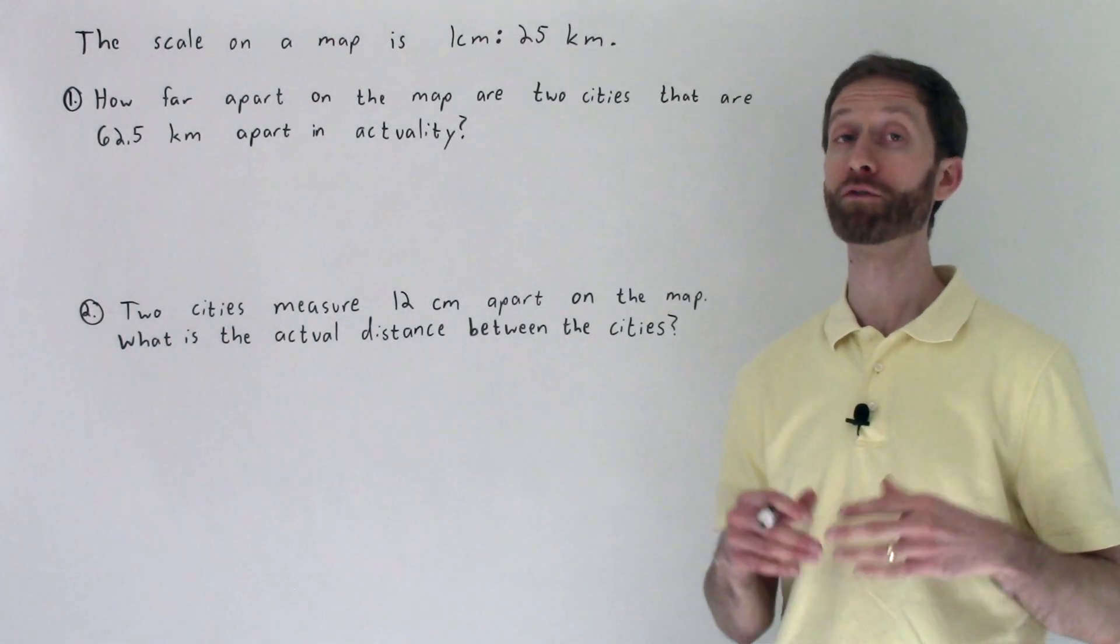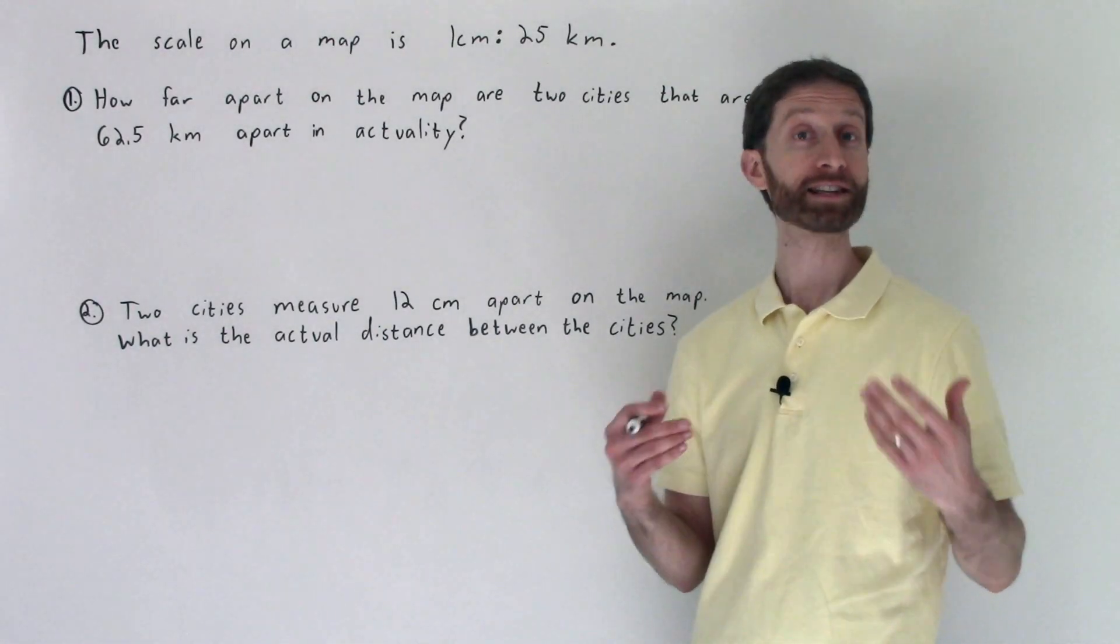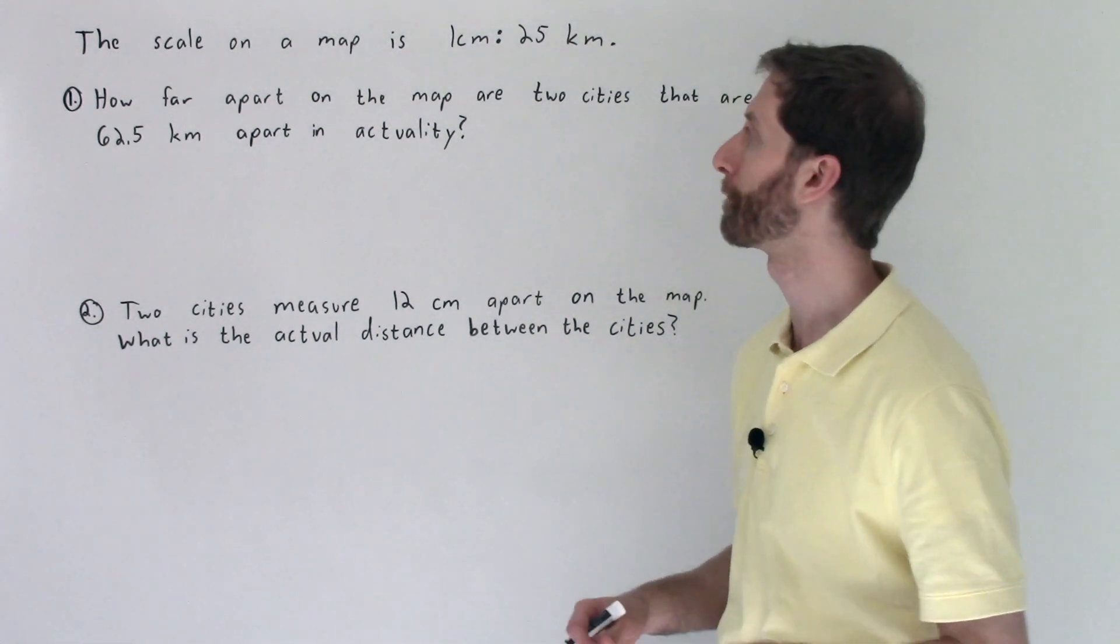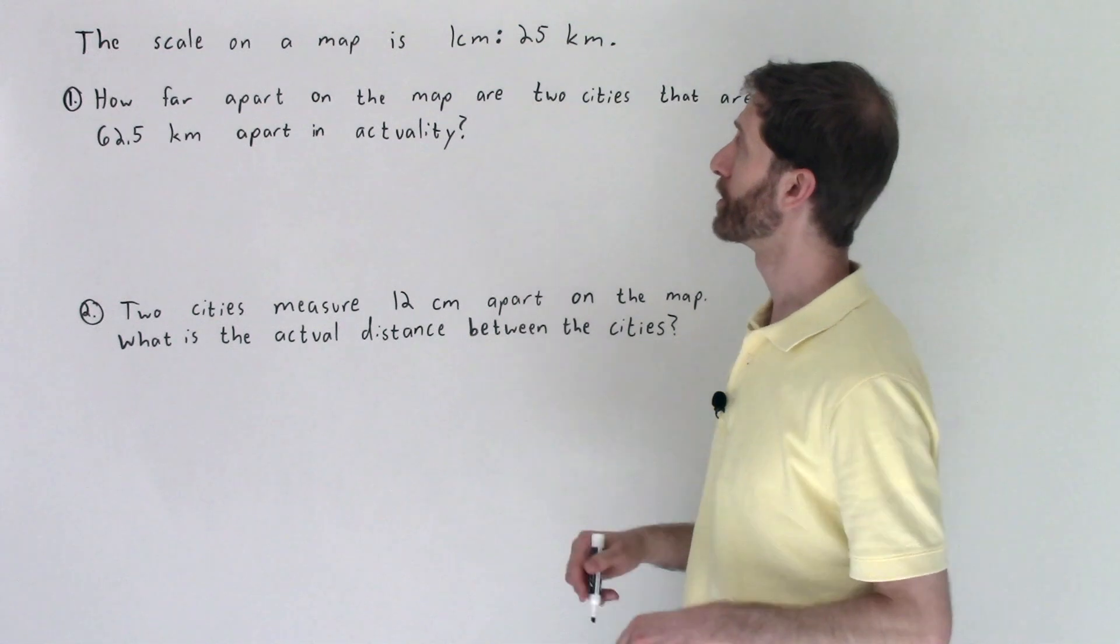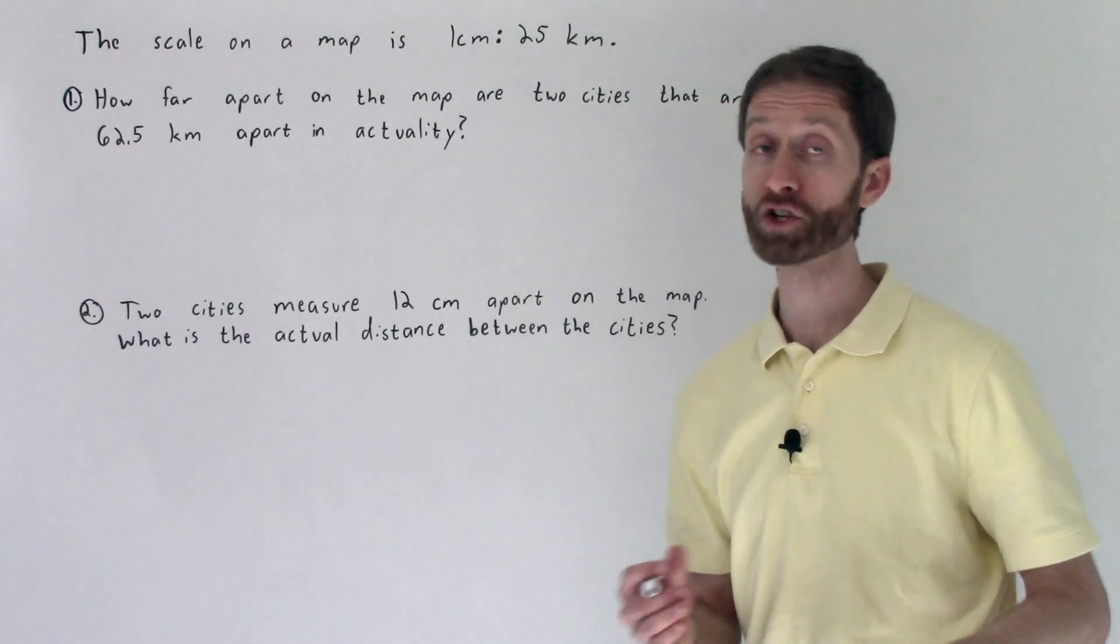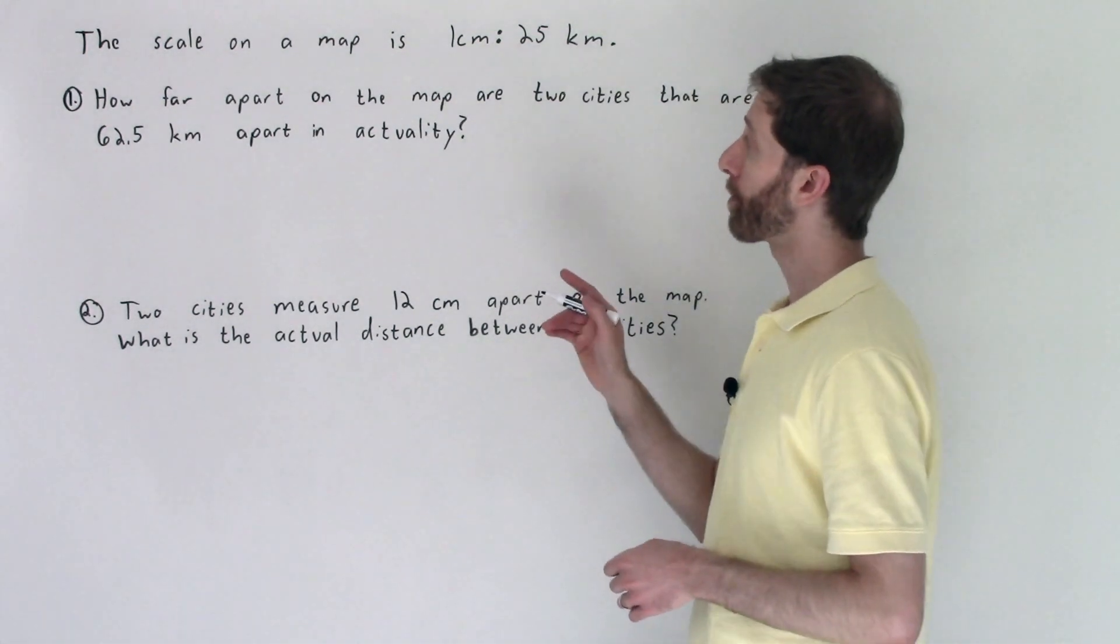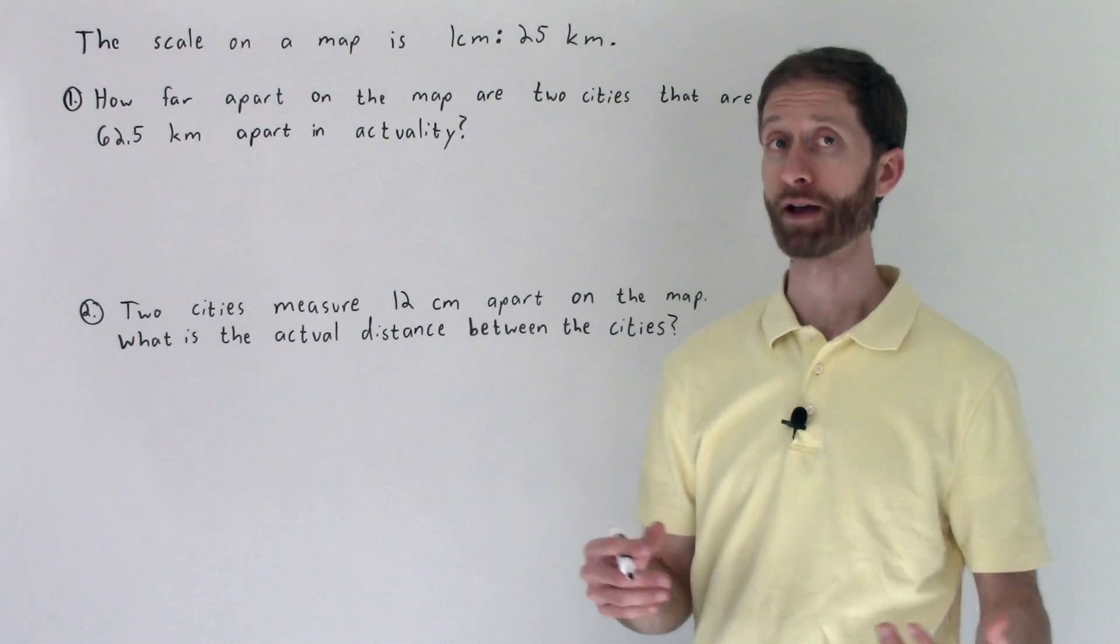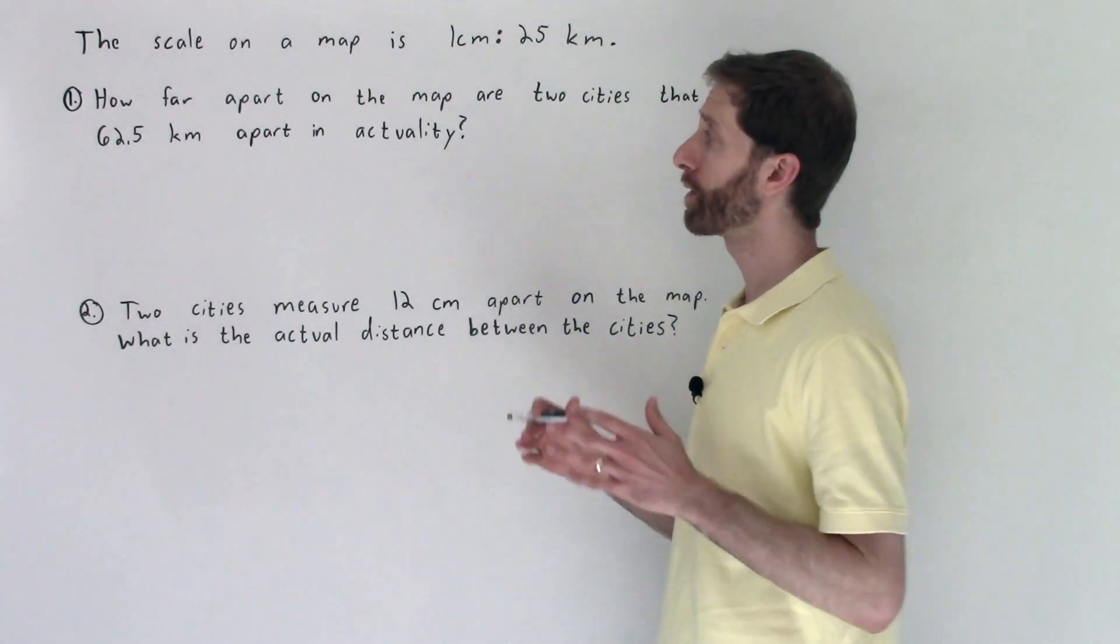In this video we're going to go over some word problems that involve scales. Proportions are all over these things. Let's check it out. The scale on a map is one centimeter to 25 kilometers. So that's the ratio that we're given. How far apart on the map are two cities that are 62.5 kilometers apart in actuality?